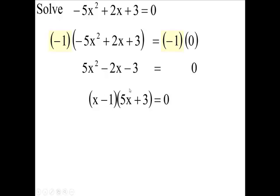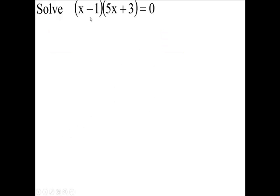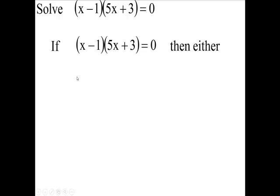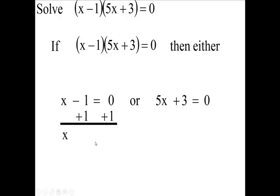So if a times b, if this times this is 0, then either a is 0, either x minus 1 is 0. If this times this is 0, either x minus 1 is 0, or the 5x plus 3 is 0. Now, if this is 0, we're going to add 1, we're going to get x equals 1, and we're done with that. So either this is true or this is true.